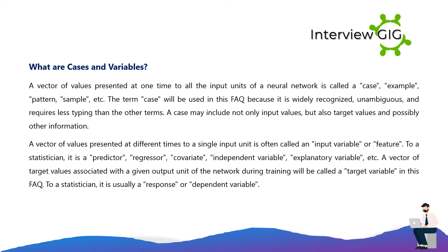A vector of values presented at one time to all the input units of a neural network is called a case, example, pattern, or sample. The term 'case' is widely recognized and unambiguous. A case may include not only input values but also target values and possibly other information. A vector of values presented at different times to a single input unit is called an input variable or feature — to a statistician, it is a predictor, regressor, covariate, independent variable, or explanatory variable. A vector of target values associated with a given output unit during training is called a target variable — to a statistician, it is usually a response or dependent variable.